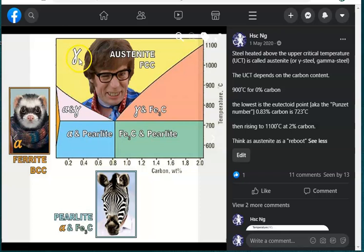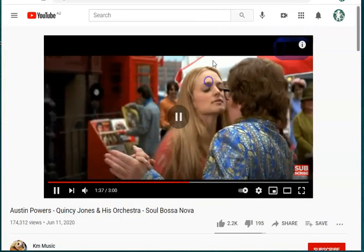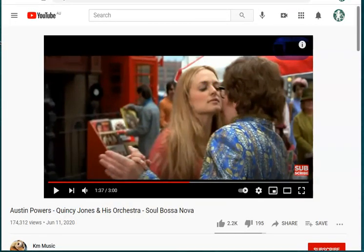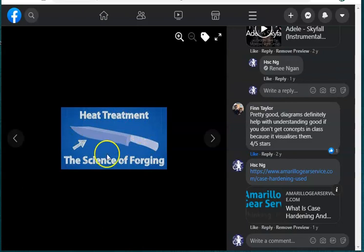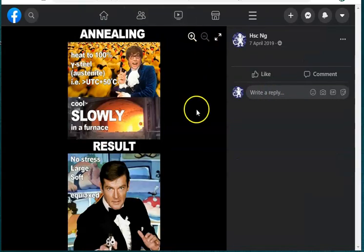Austenite is a face-centered cubic. It's sometimes called gamma steel. And I remember it as GAF, because Austin makes a lot of gaffs. A gaff is where you make a mistake and it's embarrassing. Austin makes a lot of gaffs. He's a face-centered cubic. What we're going to learn is that face-centered cubics are ductile. Austin is ductile. First of all, whenever we want to reboot steel, we have to go into the austenite range. It's very hot, red hot. If the steel isn't red, it isn't austenite yet.